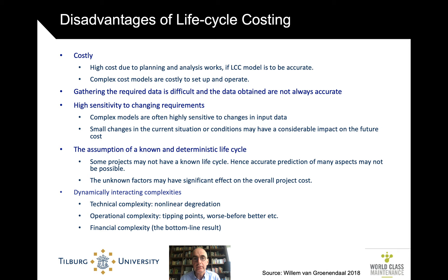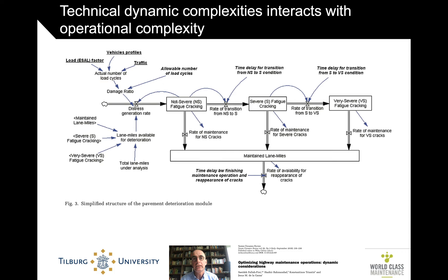There is, of course, a technical complexity — we'll dwell a little on that, although this is not a mechanical engineering lecture. We'll talk about operational complexity influenced by technical complexity: things like tipping points and 'worse before better.' To illustrate, here's an example from a system dynamics analysis of highway maintenance operations. On the technical side, cracks in the pavement move from not severe to severe to very severe, and the rate of maintenance needed for each differs — it doesn't move linearly at all.